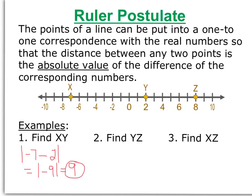Another way we could do this is just count on our number line. Like in number 2, if I wanted to find the length of YZ, I could start at Y and move 1, 2, 3, 4, 5, 6 spaces, so my length is 6. Or mathematically we could take absolute value of 2 minus 8 and we get 6. And finally, the length of XZ would be absolute value of negative 7 minus 8, or 15.